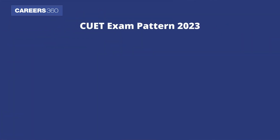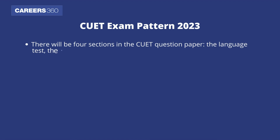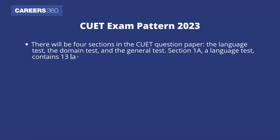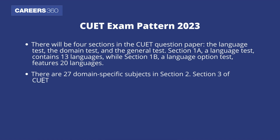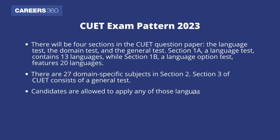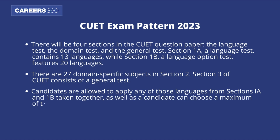CUET exam pattern 2023: There will be four sections in the CUET question paper — the language test, the domain test, and the general test. Section 1A contains 13 languages while Section 1B features 20 languages. There are 27 domain-specific subjects in Section 2. Section 3 consists of a general test. Candidates can choose a maximum of 10 subjects from all three sections combined.